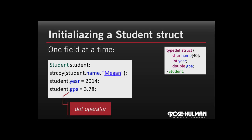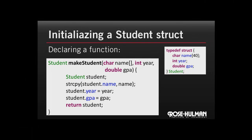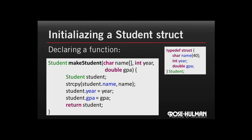What if we had a lot of students to initialize? A better solution would be to use a function. Here we're declaring a function called make_student that takes the three values it needs — the name, year, and GPA — and is going to stick them into the struct. We declare a Student struct inside the function, fill it with all of the data as we did before, and then return it.